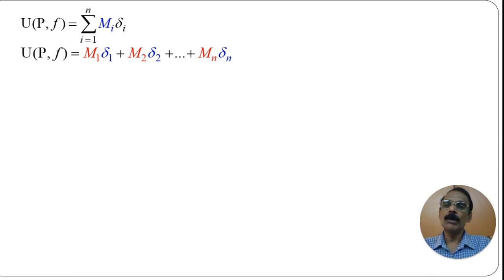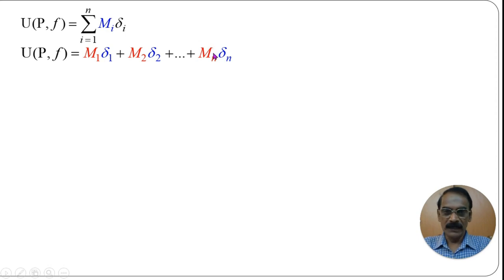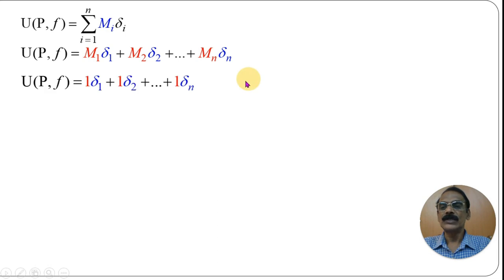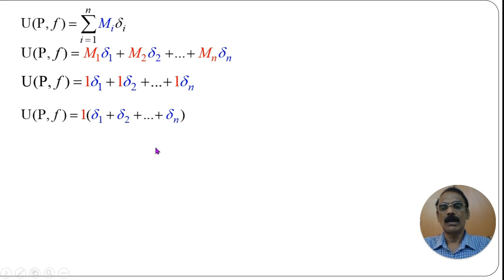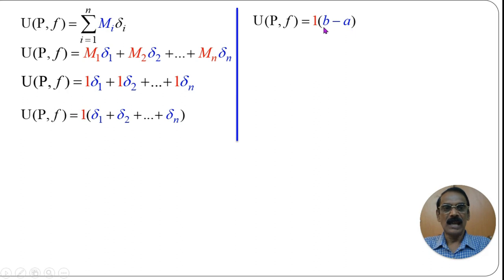Since every subinterval contains rational numbers, the supremum Mᵢ of f on each subinterval equals 1. So M₁ = M₂ = ... = Mₙ = 1. Taking 1 as a common factor, the upper Riemann sum becomes 1·(Δ₁ + Δ₂ + ... + Δₙ) = Σᵢ₌₁ⁿ Δᵢ = b − a. Therefore, the upper Riemann sum with respect to any partition is b − a.